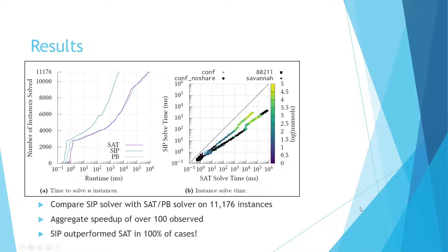From a quick review of our results, we can see that a constraint-based solver performs much better than a SAT encoder for this type of problem. We see an aggregate speedup of over 100x, and in our 10,000-plus test cases our subgraph isomorphism solver outperformed current SAT encodings in over 100% of all test cases.